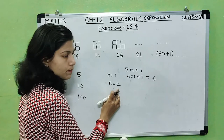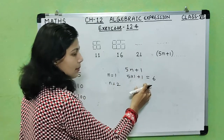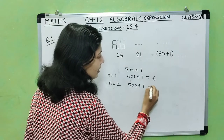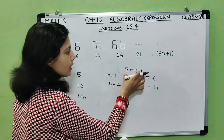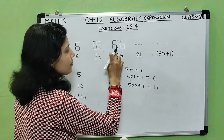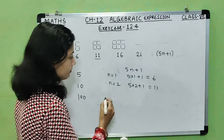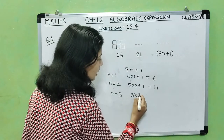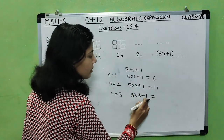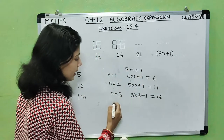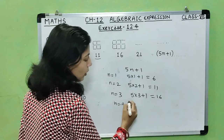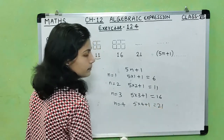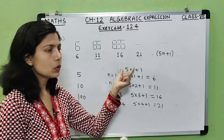For n equals 2, using the algebraic expression 5n plus 1: 5 into 2 plus 1 equals 11. You can verify this by counting. If n equals 3, meaning three 6s, then 5 into 3 plus 1 equals 15 plus 1 equals 16. If n equals 4, meaning four 6s, then 5 into 4 plus 1 equals 20 plus 1 equals 21.